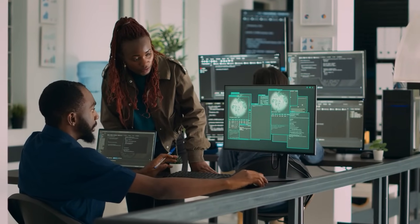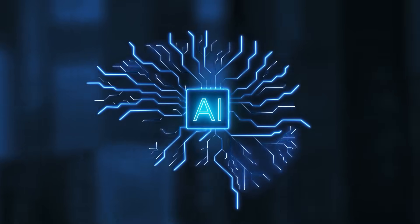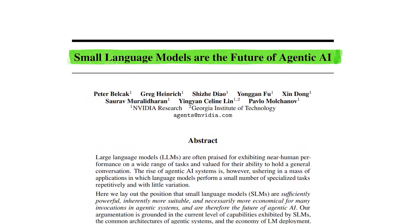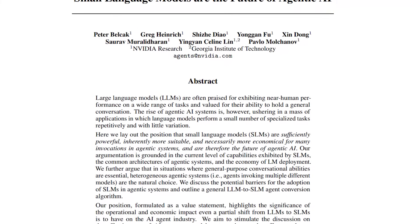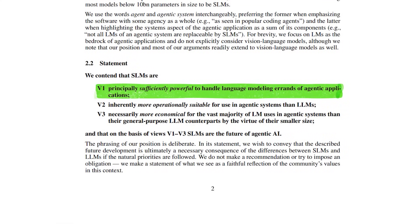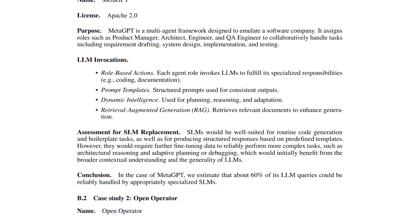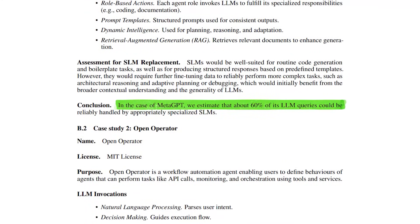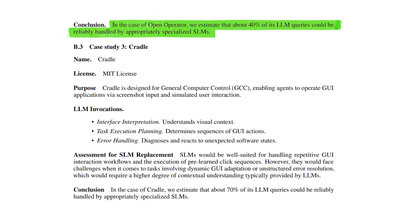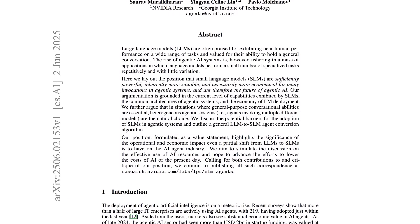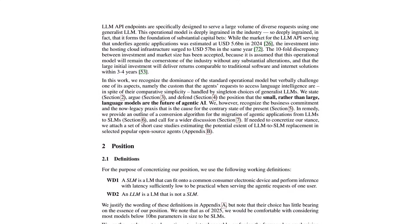This is not a retreat, it's the next step, because now we are making higher leverage decisions and designing more abstract architectures. Even NVIDIA came out to say small language models are the future of agentic AI. In the paper, they argue small language models, or SLIMs, are principally sufficiently powerful to handle language modeling rounds of agentic applications. Inherently more operationally suitable for use in agentic systems than LLMs. Necessarily more economical for the vast majority of LLM uses in agentic systems than their general purpose LLM counterparts by the virtue of their smaller size. And they also show with reliable data that a lot of current AI workflows could be replaced by smaller models that cost 10 to 30 times less. In meta-GBT, we estimate that about 60% of LLM queries could be reliably handled by appropriately specialized SLIMs. 40% in open operator and 70% in cradle. They are saying we are already too big for a lot of tasks. And modular systems are not just good enough, they are fundamentally better.